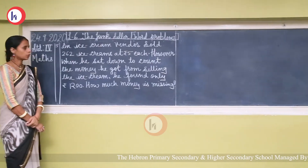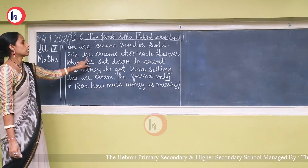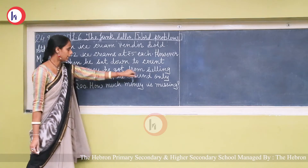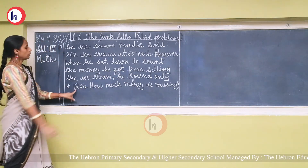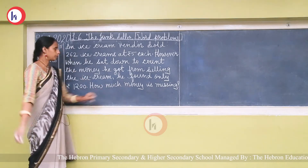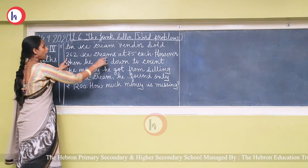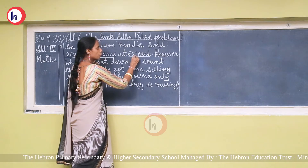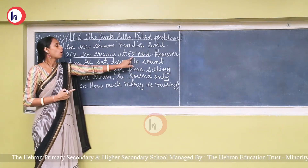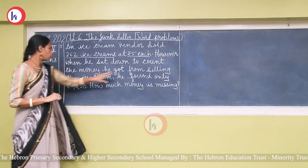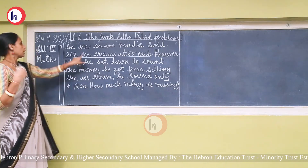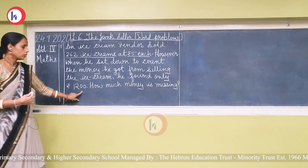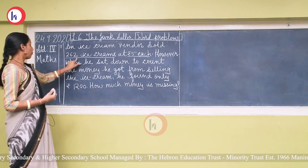Next question: An ice cream vendor sold 262 ice creams at rupees 5 each. When he counted the money from selling, he found only rupees 1200. How much money is missing? He sold 262 ice creams, each costing rupees 5. We first find the total cost of 262 ice creams.